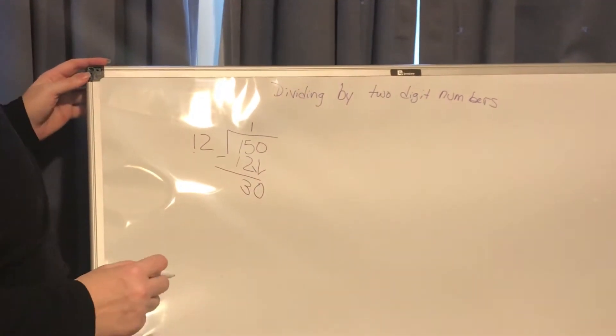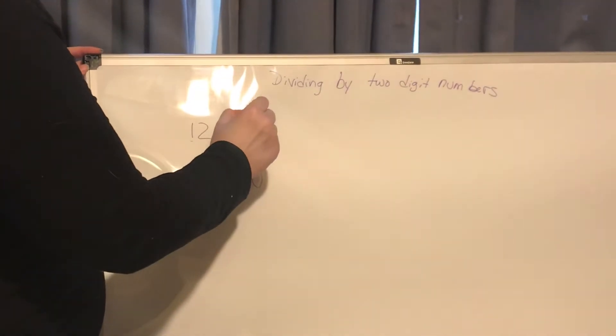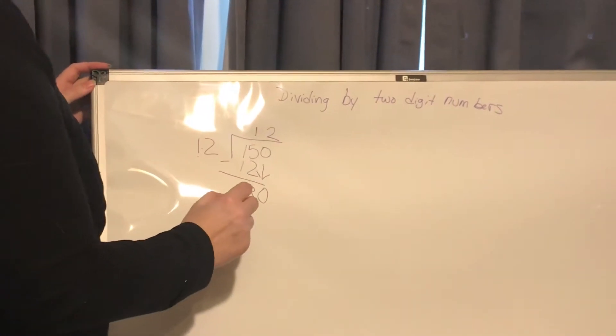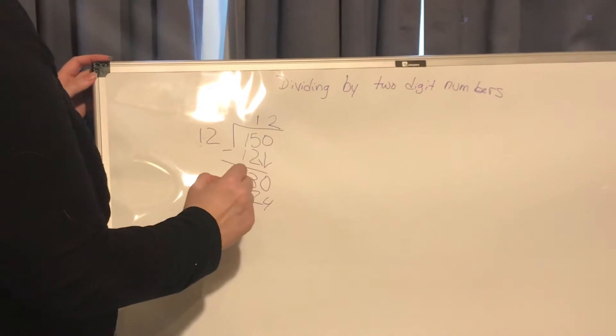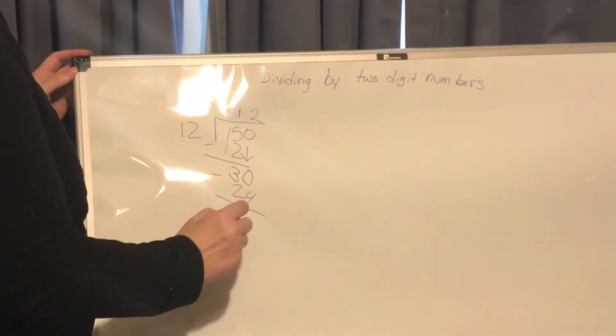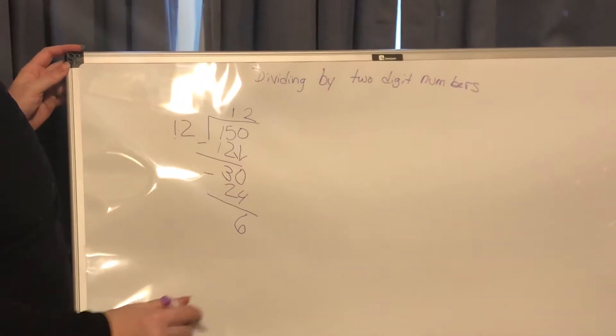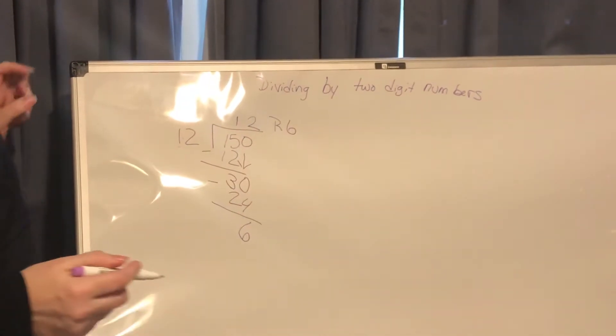And how many times can 12 go into 30? That would be 2. So the 2 gets placed above the 0. 12 times 2 is 24 and I'm subtracting 30 minus 24 is 6. I do not have any other digits to bring down, so the answer is 12 with a remainder of 6.